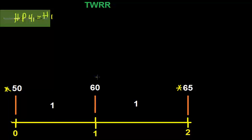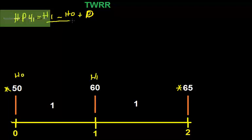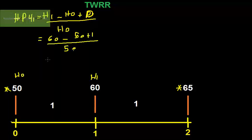HP1 is going to equal: the value of the investment at the end of the period (H1) minus the value of the investment at the beginning of the period (H0), plus any stream of income such as dividends, all divided by H0. This equals (60 - 50 + 1) / 50, giving HPY1 equal to 22%.